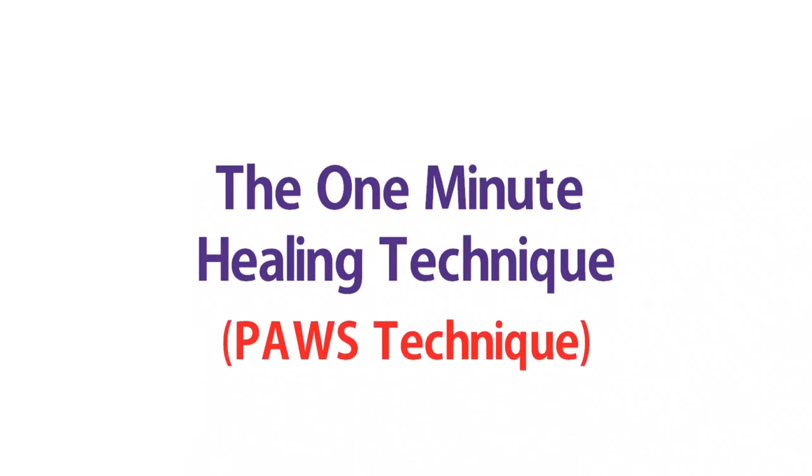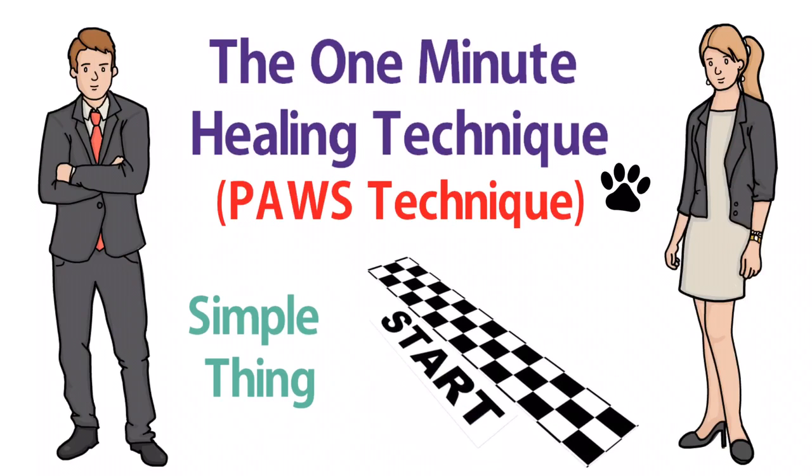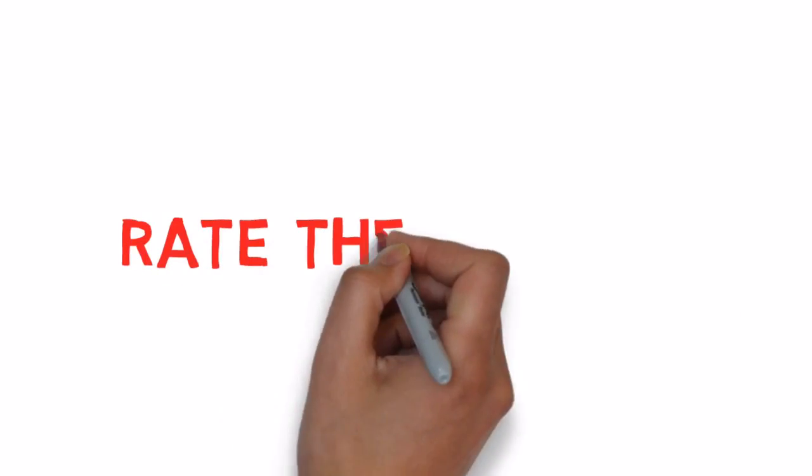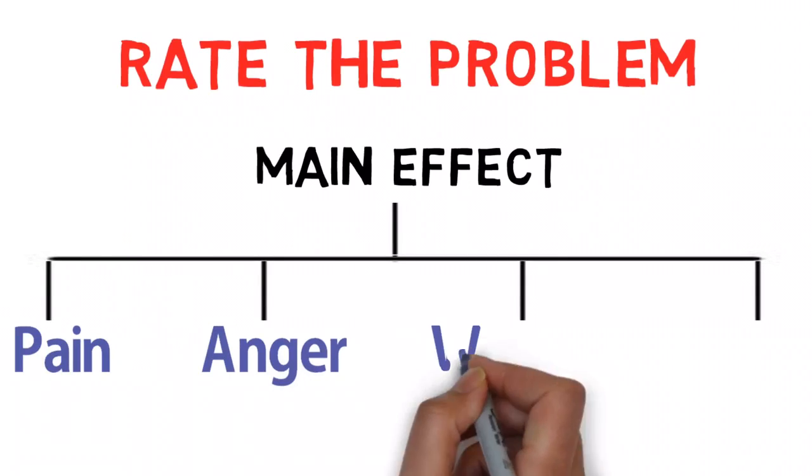The One Minute Healing Technique, or PAWS technique, asks you to do a simple thing to start. Rate the problem you are having in terms of the main effect, whether it's pain, anger, worry, or sadness.